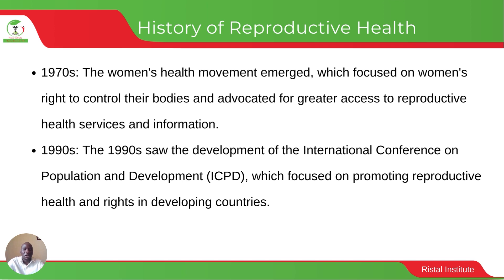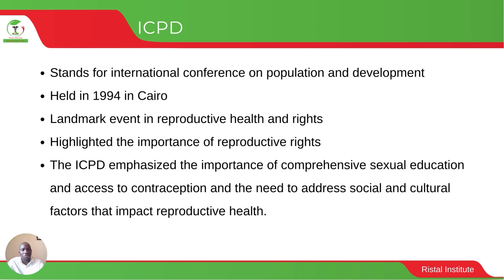In the 1990s, a conference was held in Cairo — the International Conference on Population and Development, ICPD — focused on promoting reproductive health and rights, especially in developing countries. The International Conference on Population and Development was held in Cairo, Egypt, in 1994.